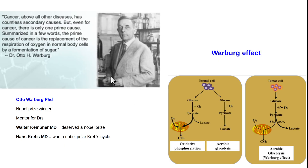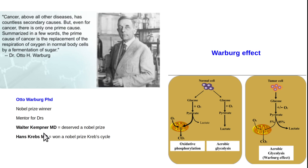Otto Warburg was a biochemist — many consider him the greatest biochemist of the 1900s. He won the Nobel Prize. Hans Krebs was one of his students and discovered the Krebs cycle, also winning a Nobel Prize. Another student was Walter Kempner, who developed the rice diet.